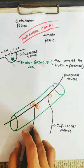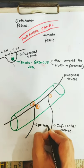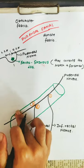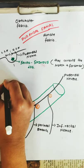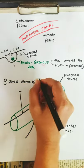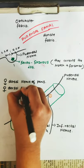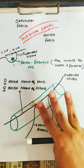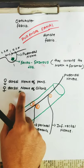The second branch it gives off is the perineal branch. The third branch — in males it is called the dorsal nerve of the penis; in females it is called the dorsal nerve of the clitoris. So the pudendal nerve gives off three branches: the inferior rectal nerve, the perineal branch, and the dorsal nerve of penis in males or dorsal nerve of clitoris in females.